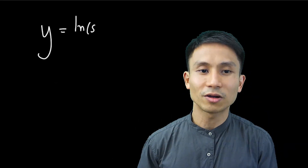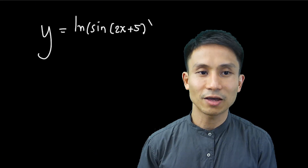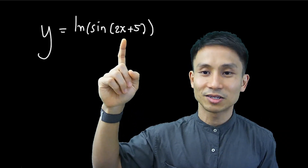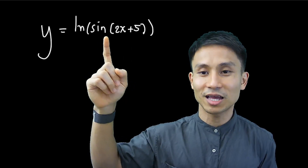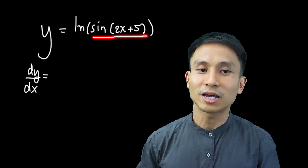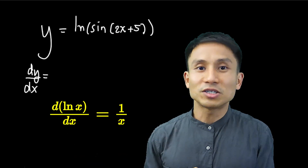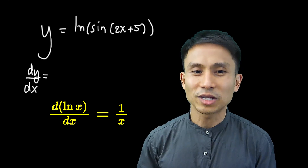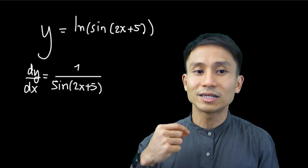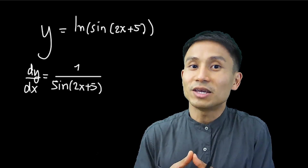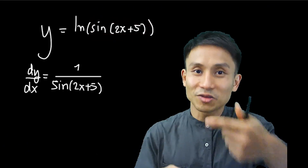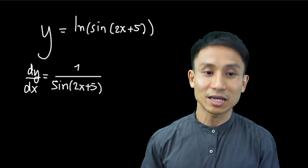Now let's do more layers: ln(sin(2x+5)). There are three types of function here. The innermost is 2x+5, the second is the sine function, and the outermost is the natural log. Since the outermost is ln of something, we treat the entire inner expression as a single x. Differentiating ln(x) gives 1/x, so we write 1/sin(2x+5). Going one layer inside, we see sin(2x+5) — the outermost operation there is sine. Differentiating sine gives cosine, keeping the inner part the same: cos(2x+5).